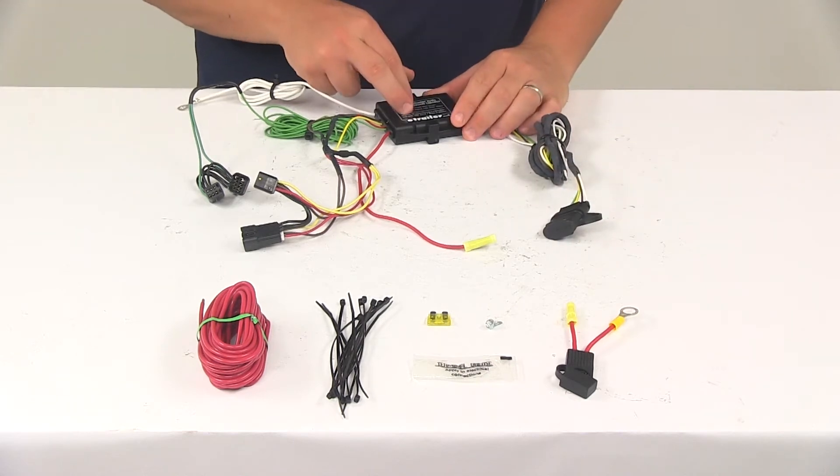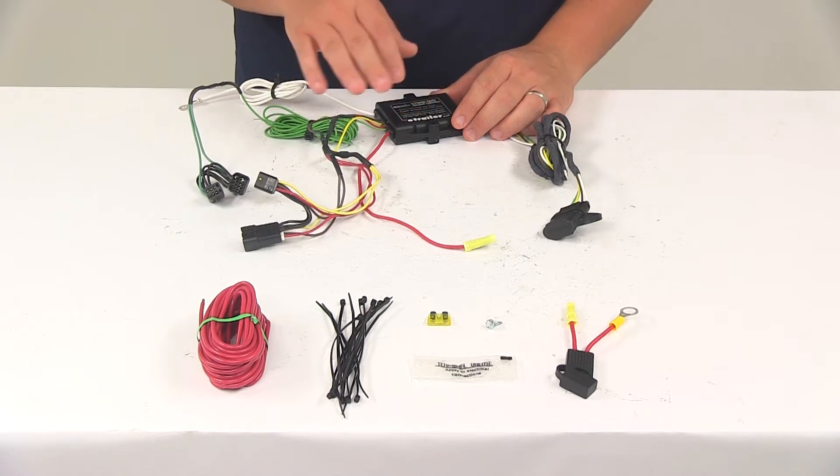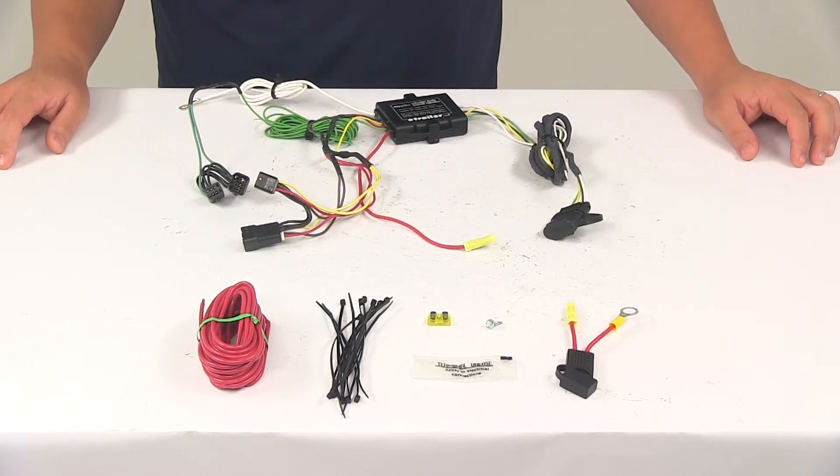The black box right here is the included tail light converter. This is going to ensure that your vehicle's wiring matches out of your trailer's. This is a power module that connects directly to the vehicle battery through the wiring to avoid overloading the vehicle's electrical system.